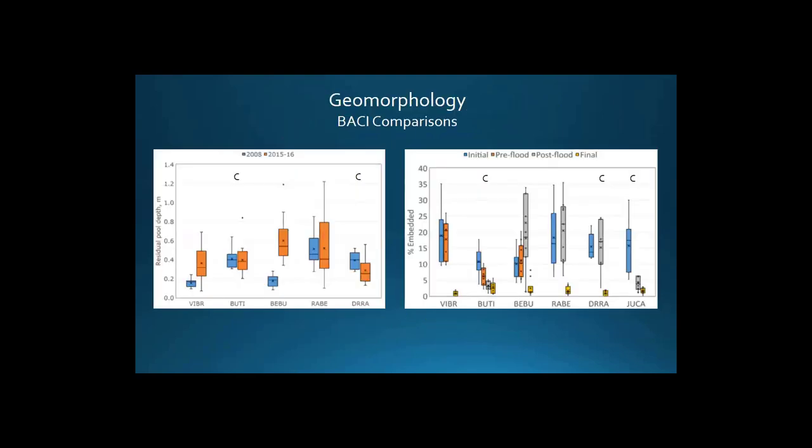Some of the geomorphology results from Pat McDowell's group show the influence of a flood event in 2011, and the response of the channel — aggradation and degradation associated with those larger wood placements. This shows control reaches she established versus treatment reaches where wood was placed. There was a positive response in residual pool depth after that large flood event, and also a positive response in the percent embeddedness of the substrate in the channels.